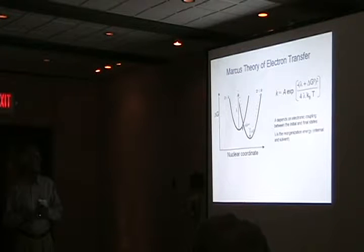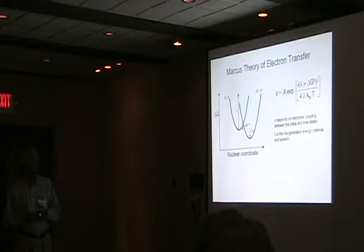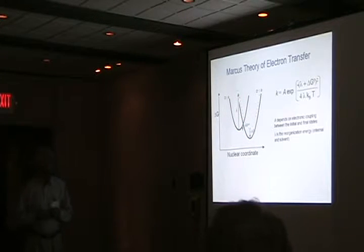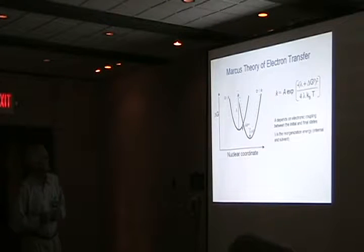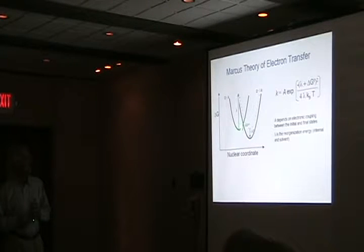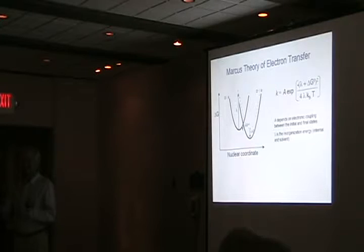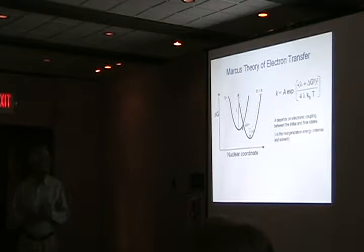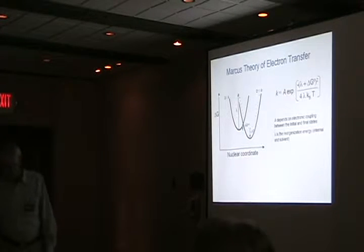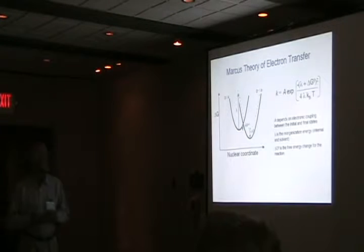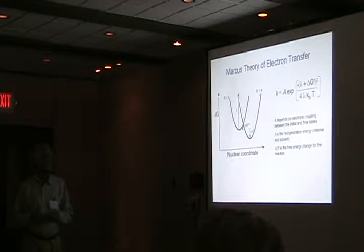Lambda is the reorganization energy. For an iso-energetic electron transfer from the initial to the final state, it's the energy difference between the initial system — where the electron resides on the donor — and the final system — where the electron resides on the acceptor — without changing nuclear coordinates. And then the final term we deal with is the free energy change for the reaction, delta G-naught, which also figures into the exponential term.